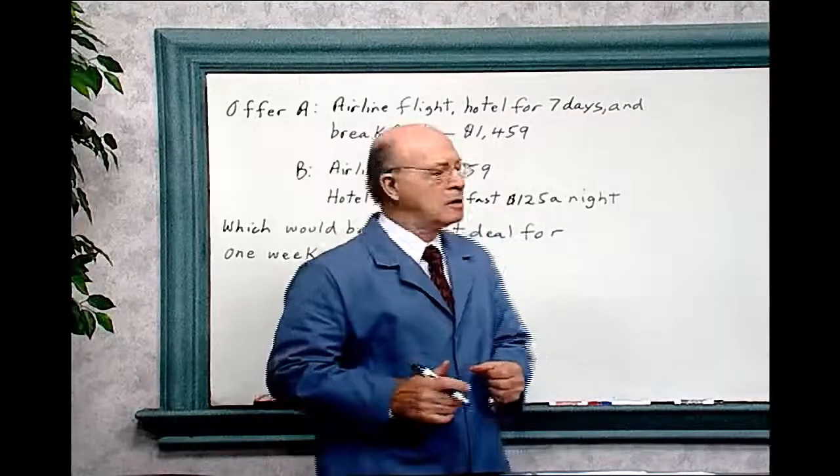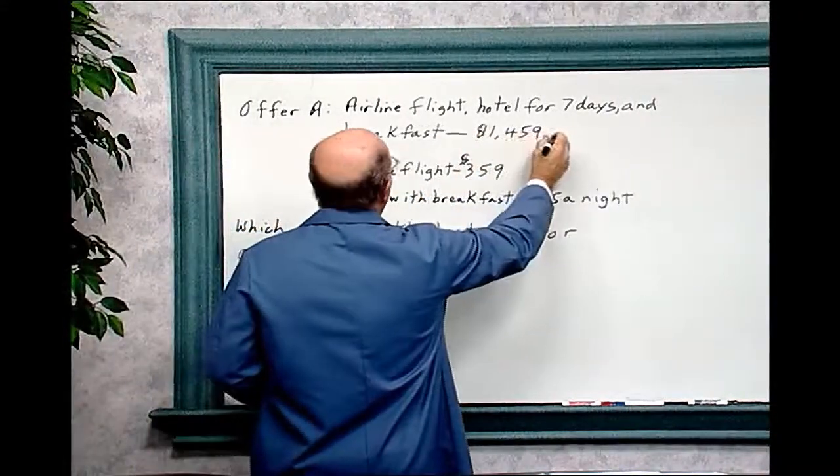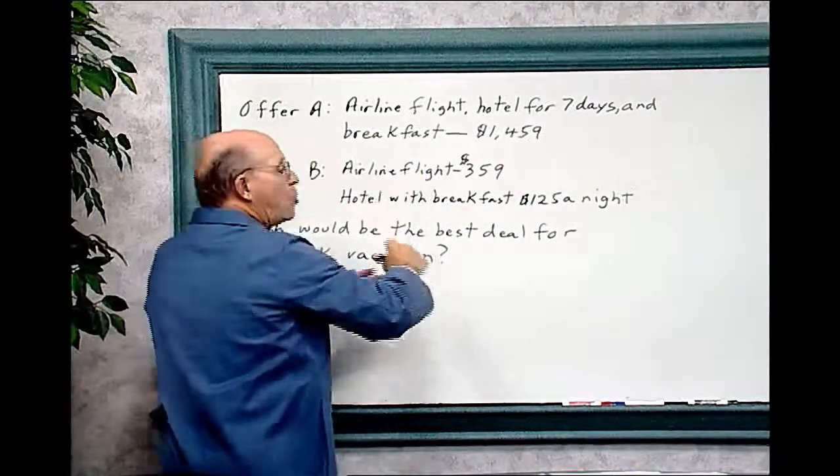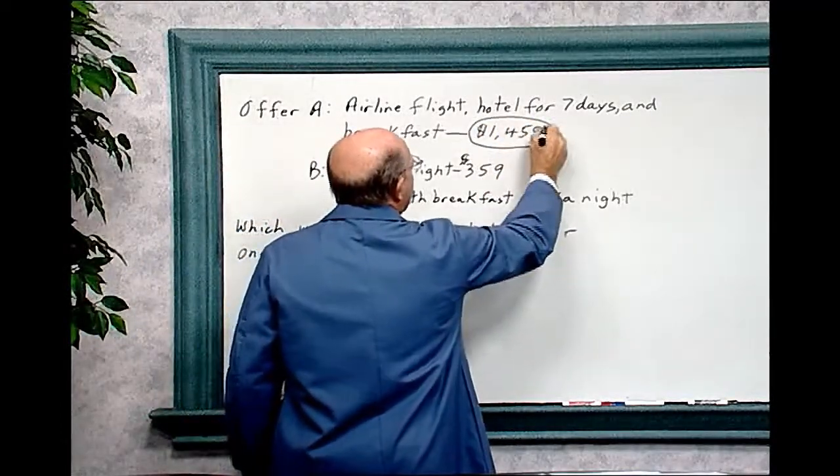Let's do the math. You have offer A: airline flight, hotel for seven days, and breakfast all included, $1,459.